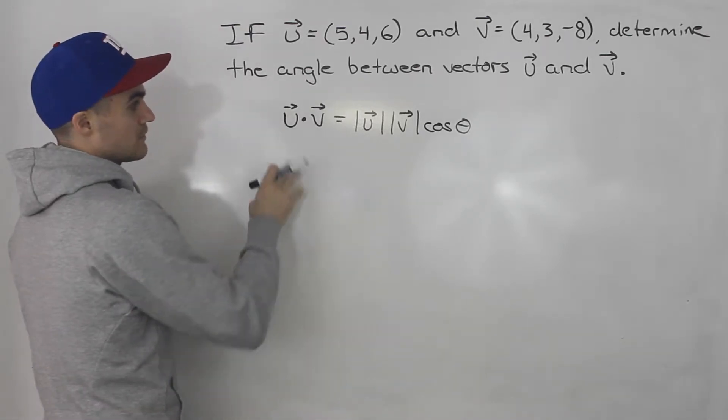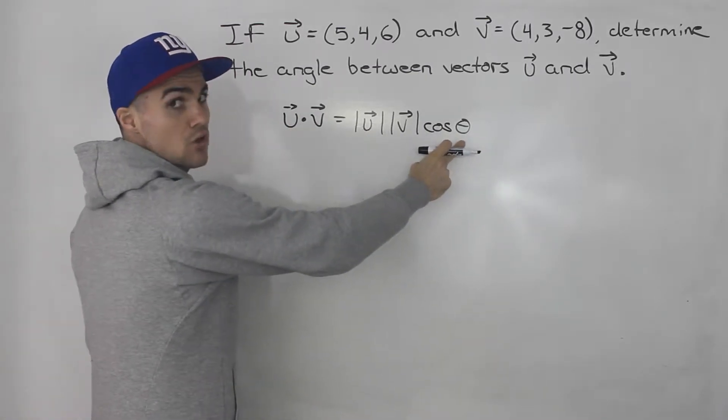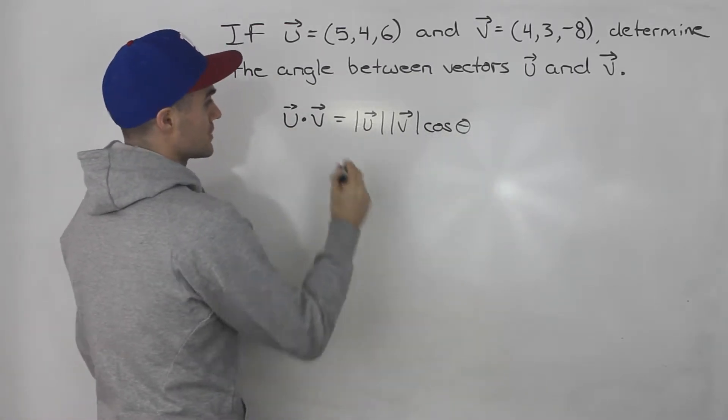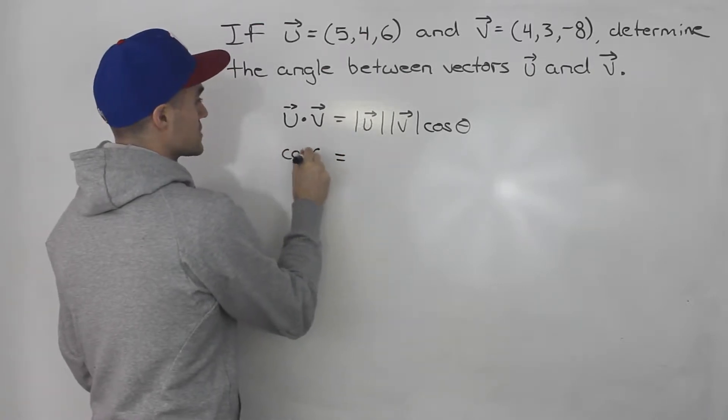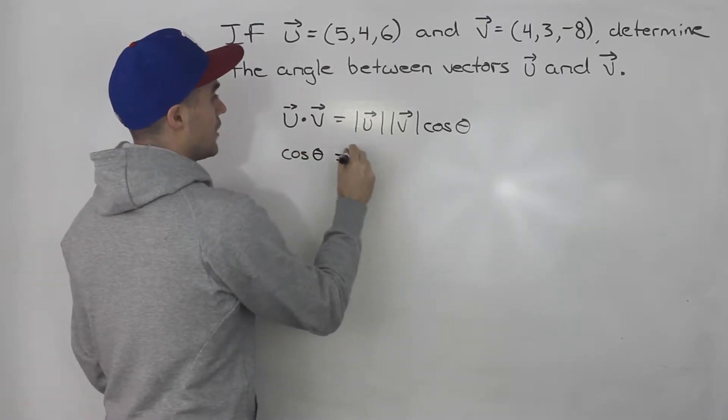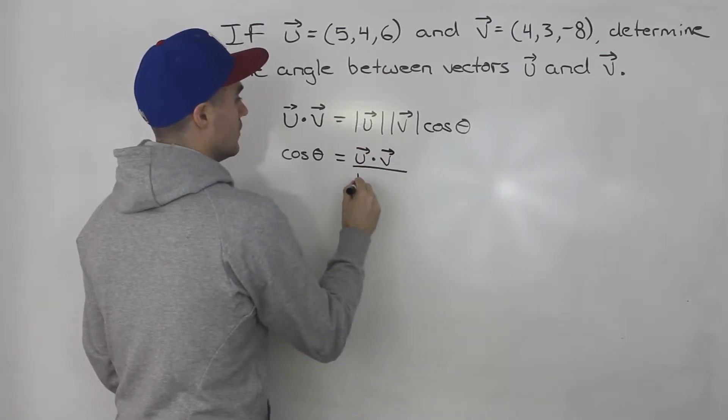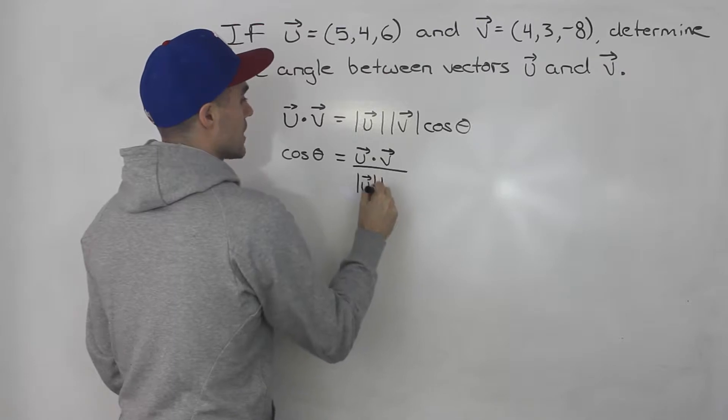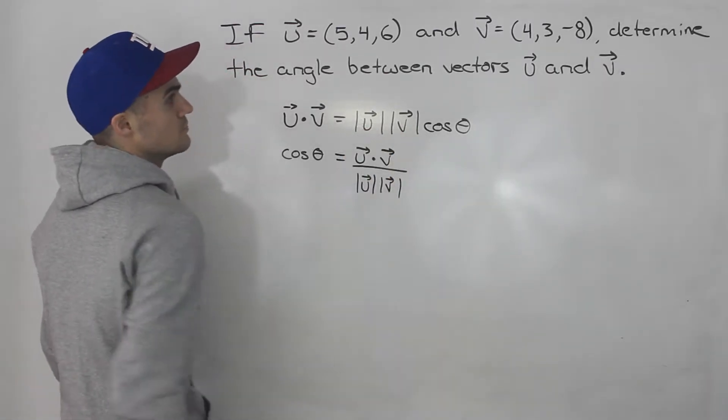So notice that we can figure everything out in this equation except for this theta and then we can just solve for that theta. That's the variable we're going to solve for. So if we isolate for cos theta, we basically have the dot product all over the magnitude of u times the magnitude of v.